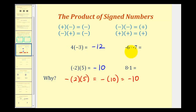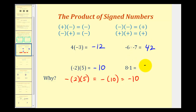Now let's take a look at these last two examples. Here we have negative six times negative seven. A negative times a negative is positive, so this is positive 42. In the last example, eight times one — that's a positive times a positive, which is also positive. Notice in these four examples, we've also seen four ways to write multiplication.